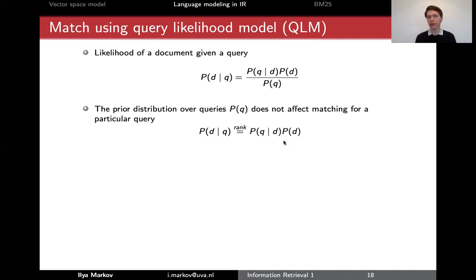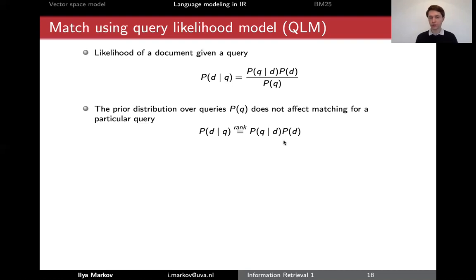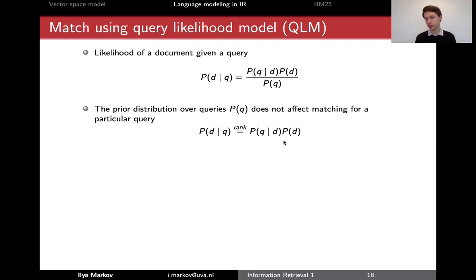What could be a prior probability of a document? Usually in an on-campus lecture we discuss this and there are multiple suggestions. One suggestion is to use a uniform distribution, meaning all documents have exactly the same prior probability, which is reasonable.